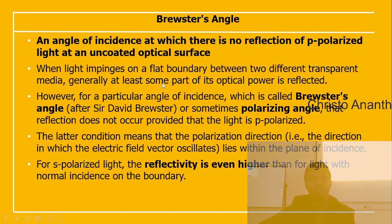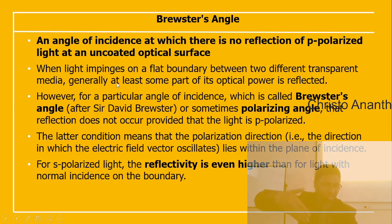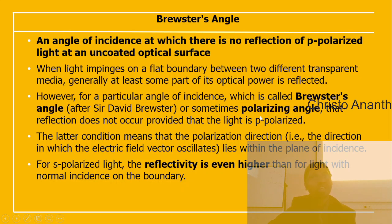Brewster's angle is the angle of incidence at which there is no reflection of p-polarized light at an uncoated optical surface. When light impinges on a flat boundary between two transparent media, at least some optical power is normally reflected. At Brewster's angle, however, reflection vanishes — provided the light is p-polarized, meaning the electric field vector oscillates within the plane of incidence.